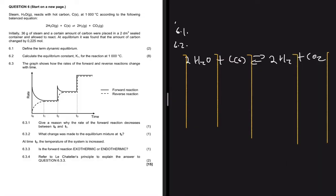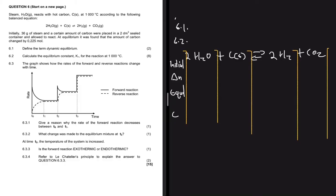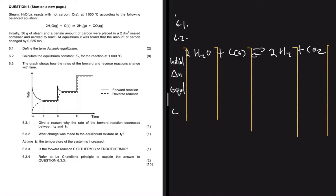The ICE table rows are: initial number of moles, change in number of moles, moles at equilibrium, and then concentration — so that we can calculate Kc.